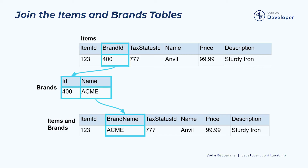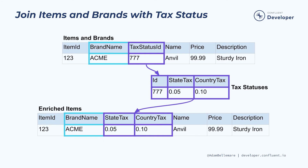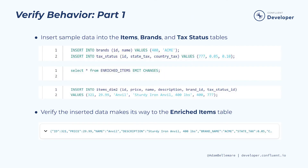You will first join the items table with the brands table. You will then join the new items and brands table with the tax statuses table. The exercise concludes with steps to verify the behavior of the new enriched items denormalized table.